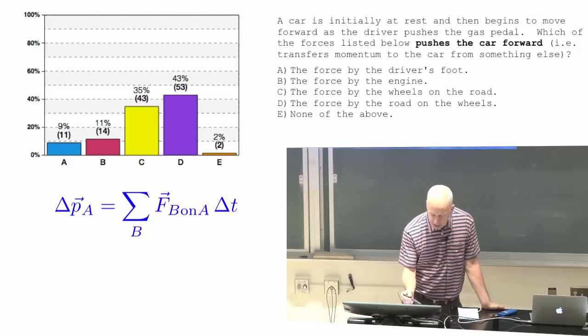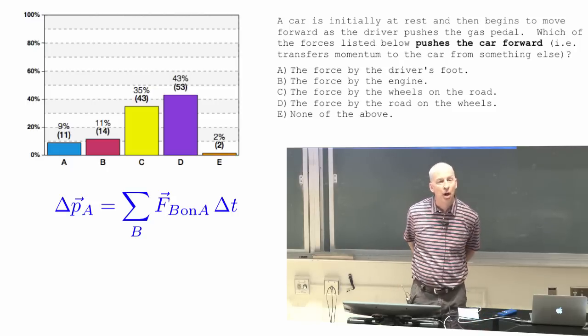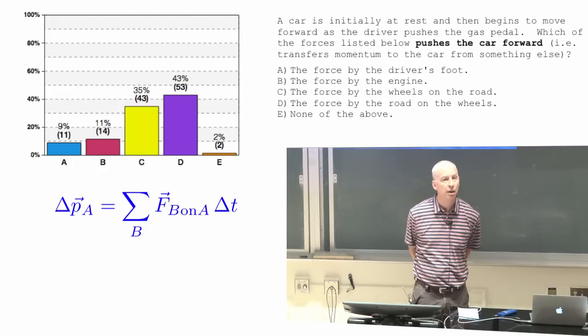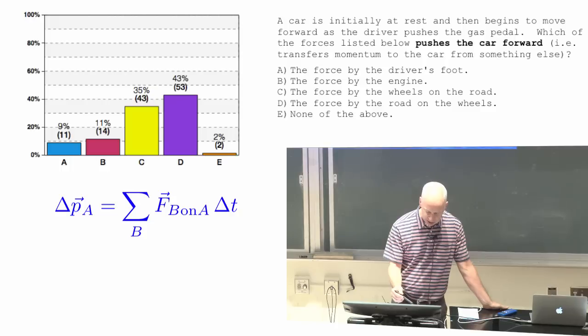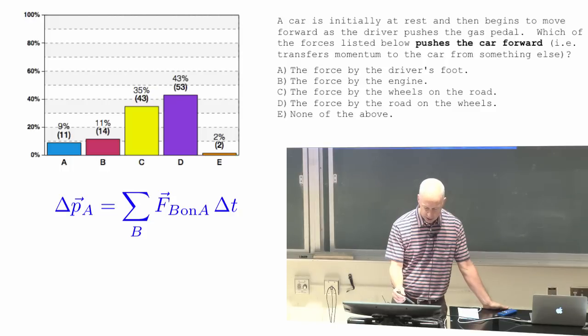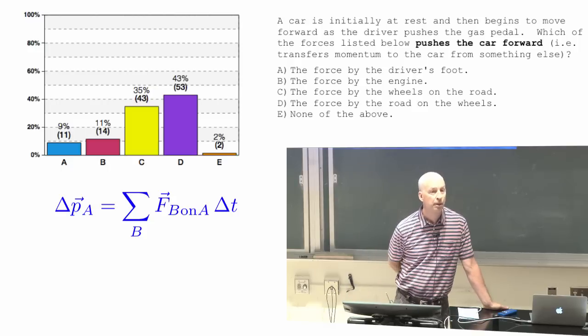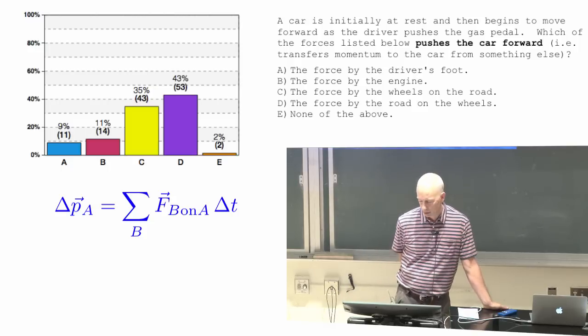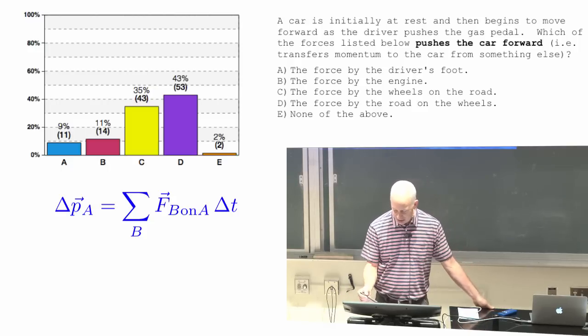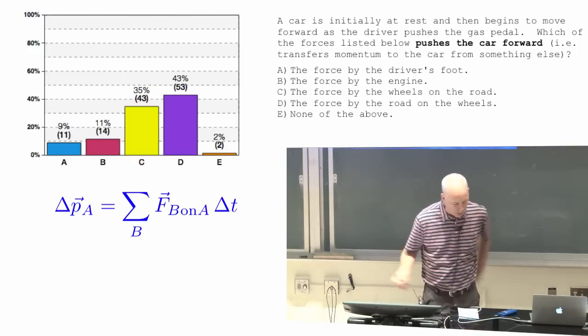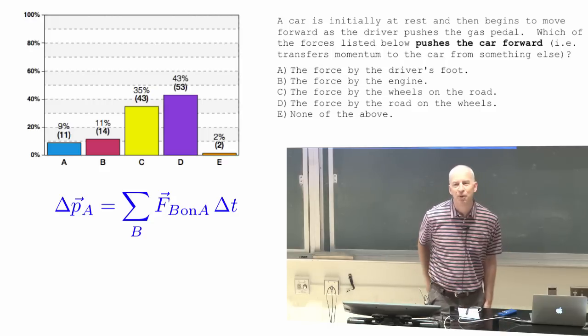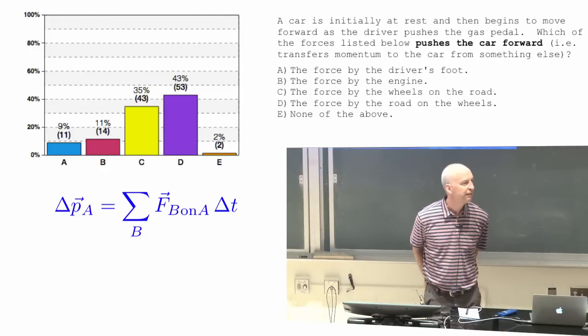So if I want to know delta P for the car, what's pushing the car forward? I would look for forces that say force on car. D is the one that says force by road on the wheels. The wheels are just a name for a part of the car. That's a force on the car.